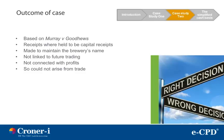Outcome of this case study: this is based on the case of Murray vs. Goodhughes. Receipts were held to be capital receipts. They were made to maintain the brewery's name. Additionally, they were not linked to future trading nor connected with profits, and therefore they could not arise from the trade.